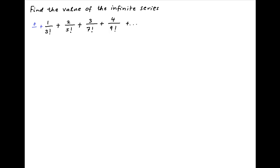Let's add 0 upon 1 factorial to the given infinite series and denote the sum by S. S can be expressed as the summation of the general term, the kth term, which is k upon (2k + 1) factorial, where k goes from 0 to infinity.